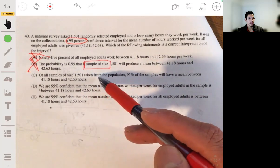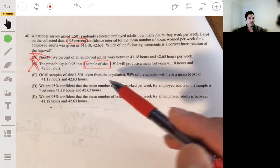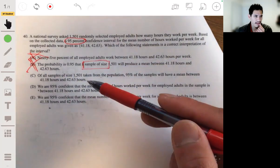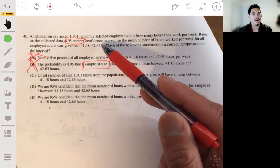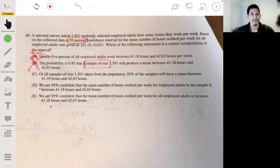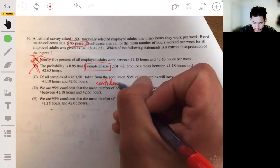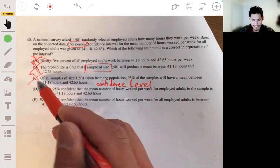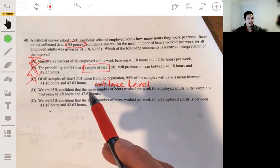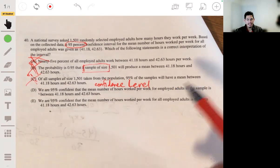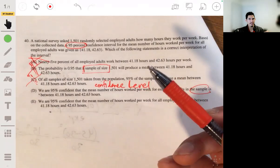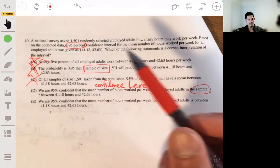C. Of all samples of size 1,501 taken from the population, 95% of the samples will have a mean between 41.18 hours and 42.63 hours. Okay, so this is kind of that. But this is actually referring to not the confidence interval but the confidence level. Let me actually mention that. This is probably the most confusing one. Confidence level. If we say confidence level, that's what this would work. But that's a good way to test it. D, we're 95% confident that the mean number of hours worked for all employees... See, again, in the sample, we know what the sample is. We were 100% certain of what the sample portion is because that's how we got our data. That's how we create our confidence interval. So not D.